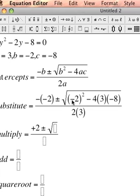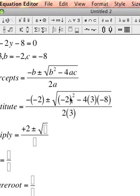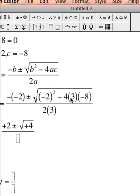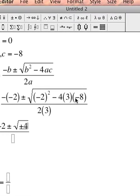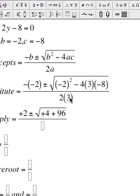Now I have negative 2 squared, so that's negative 2 times negative 2, that's positive 4. The next thing I'll multiply is negative 4 times 3, that's negative 12. Negative 12 times negative 8, well that's positive 96.